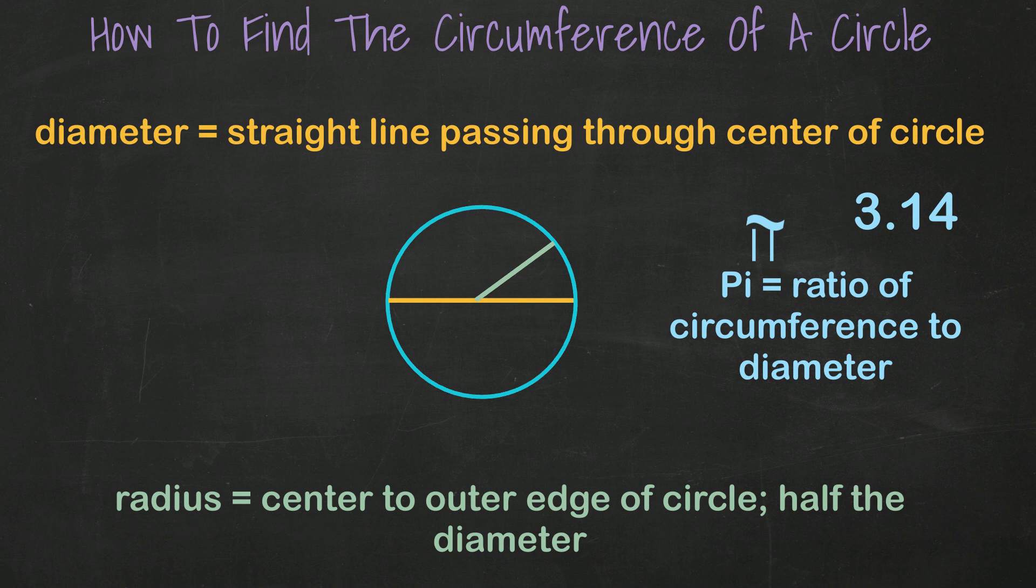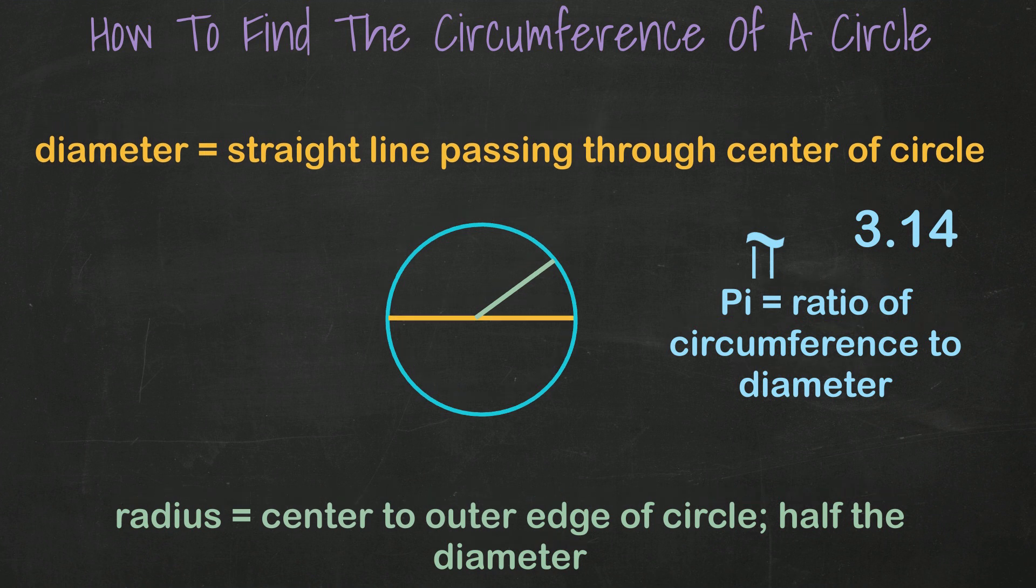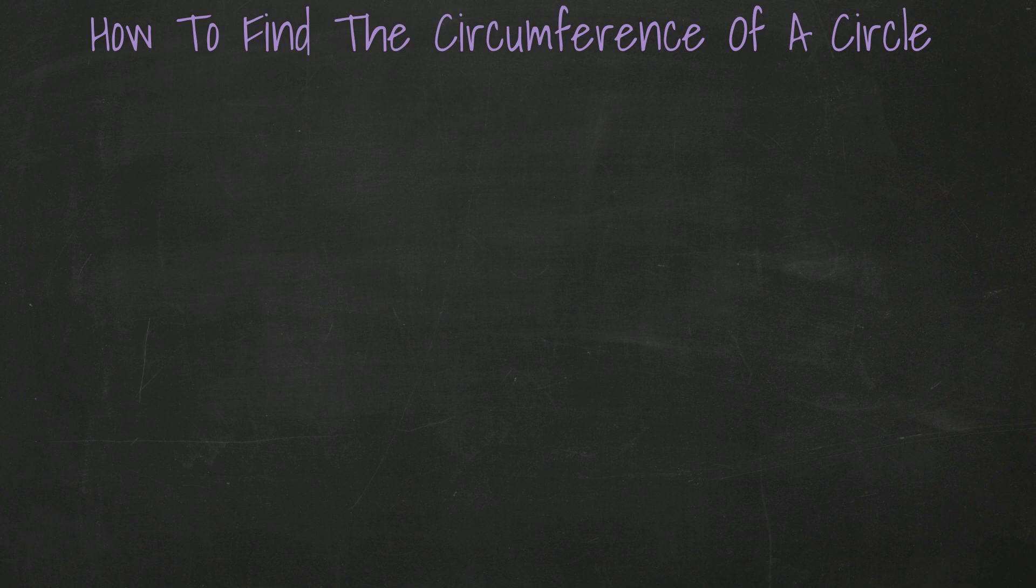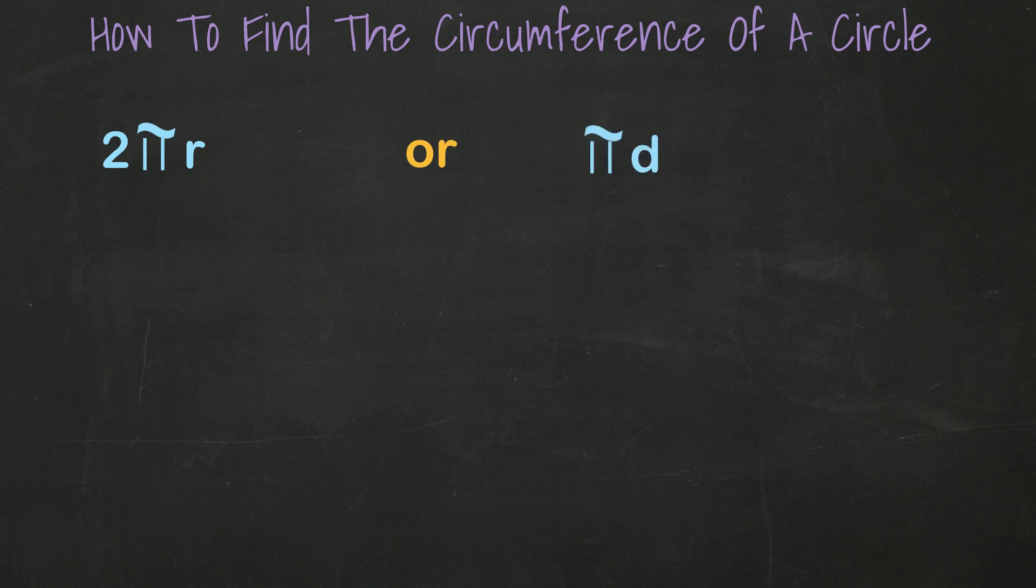So let's talk about the formula for calculating circumference. You can actually do it two ways. 2 times pi times the radius, or, since we know diameter is double the radius, you can calculate it as pi times diameter.